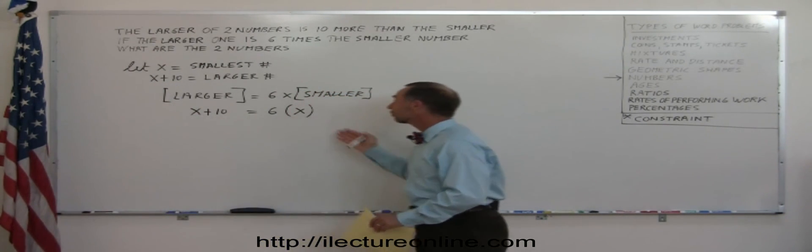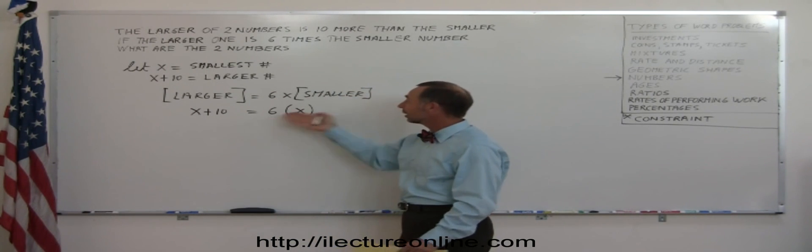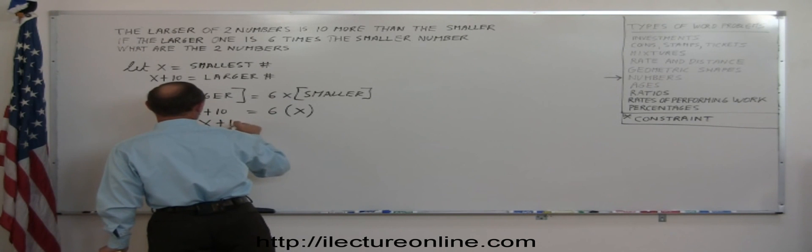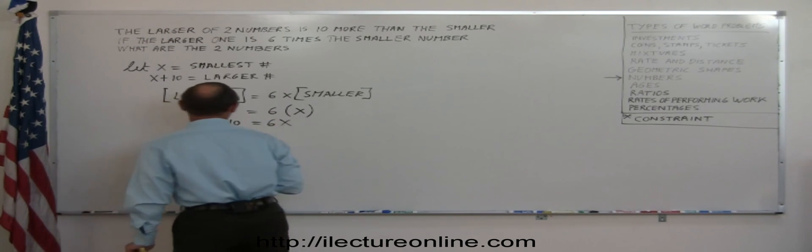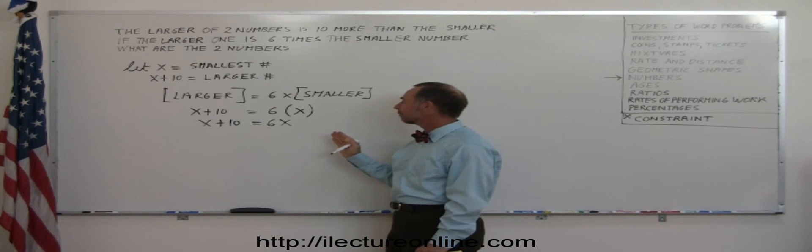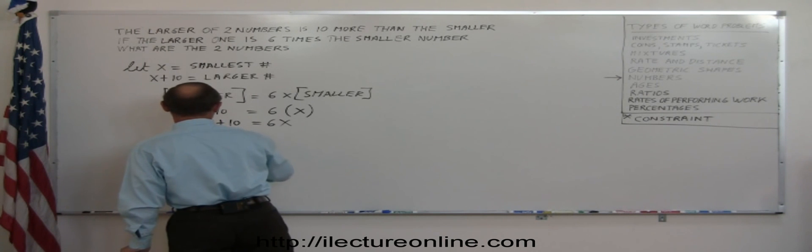So there's the constraint that helps us write the problem into an equation. Now all we have to do is simply solve this. We end up with x plus ten equals six x. The first thing we want to do is bring all the x's to one side, all the numbers to the other side. So we have x minus six x.